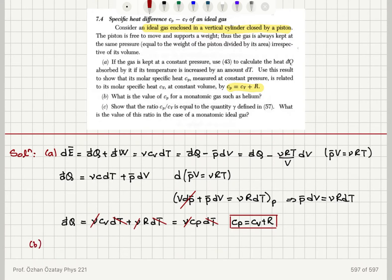Part b, what is the value of cp for a monatomic gas? In the case of a monatomic gas, I only have translational degrees of freedom, translations of the center of mass, kinetic energy. So e bar is 3 over 2 nu rt and the molar specific heat is 1 over number of moles d e bar dt at constant volume. It is 3 over 2 r and since cp is equal to cv plus r, cp is equal to 5 over 2 r for a monatomic gas.